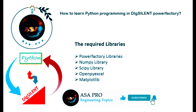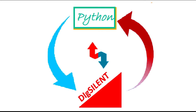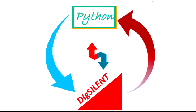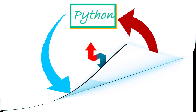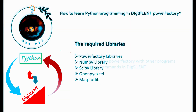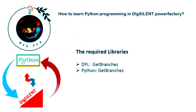It should be noted that the advantage of using Python over DIgSILENT is that in Python you can use any libraries for analyzing a power system. The first library mentioned is the PowerFactory library, which is created specifically for the integration of DIgSILENT software with Python and other programs to execute commands in the DIgSILENT environment. The functions of this library correspond to functions in DPL language.